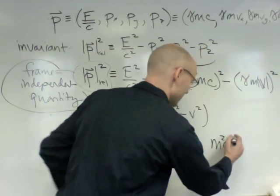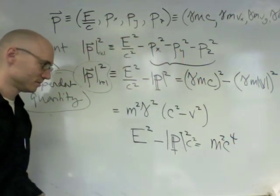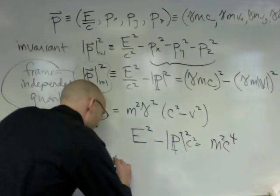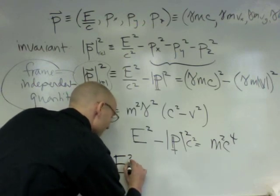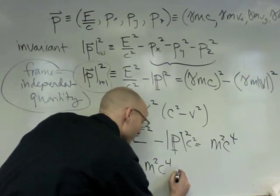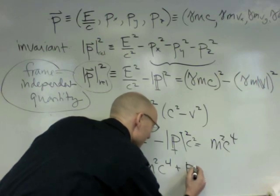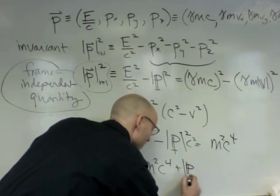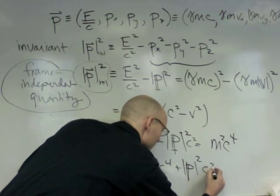This becomes an m squared c to the fourth. And then I'm going to move it to the other side. And here's the equation. E squared equals m squared c to the fourth plus P squared c squared.